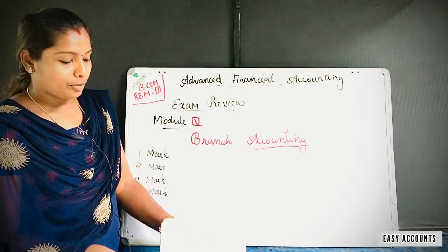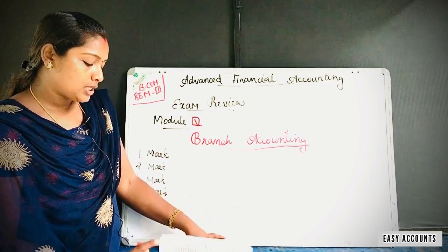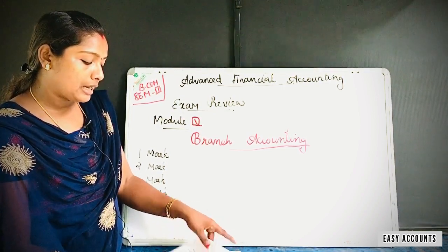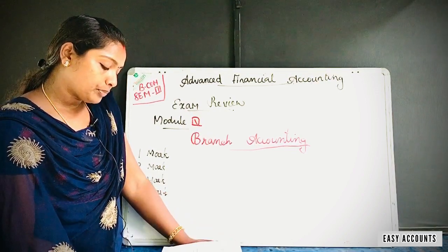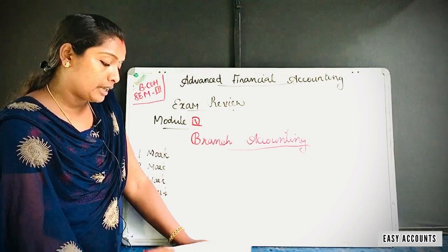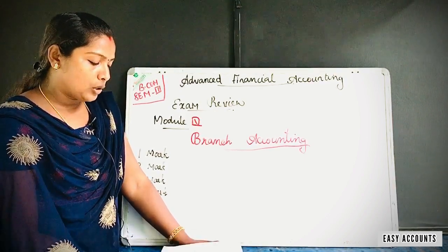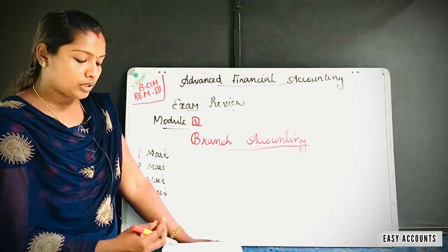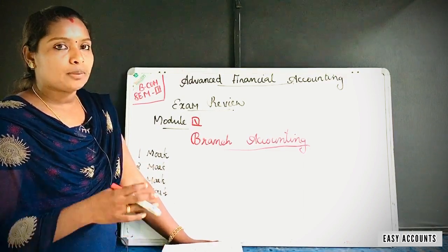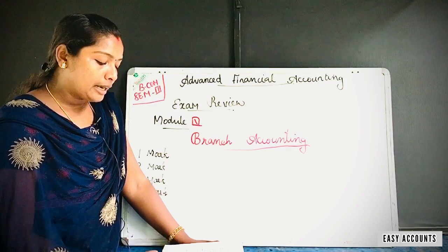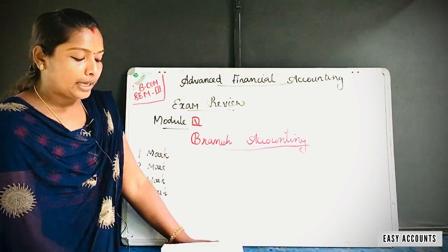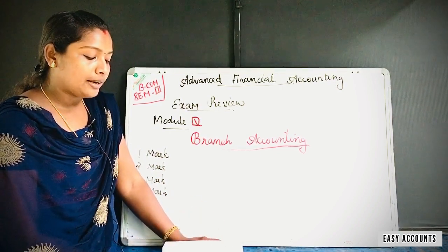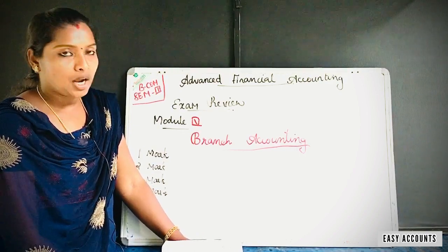We will talk about the other method — it is important to remember. What is the case of cash and credit? In this case, we will learn the invoice price. We will learn two methods: the invoice price method and the stock and debtor system.